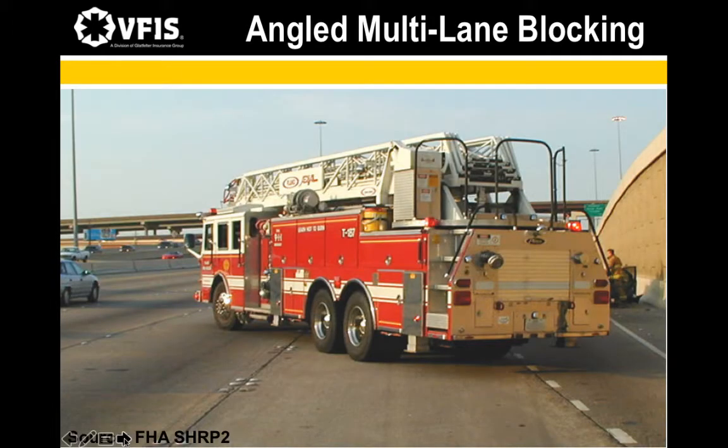Here we have an example of a firetruck using an angled, multi-lane blocking position. While it is necessary for law enforcement and EMS vehicles to employ block positioning strategies if they arrive first, large, heavy fire apparatuses provide a better block. The ideal blocking vehicle is one equipped with a truck-mounted attenuator, which are typically deployed by highway departments and respond only to intermediate or major incidents.